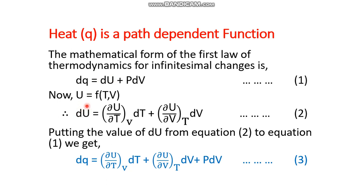In equation number one there is du, and in the left-hand side of equation number two there is also du. So the entire right-hand side of equation number two can substitute du in equation number one. Putting these two quantities in place of du, we get equation number three. This is the equation which we have to process for dq.